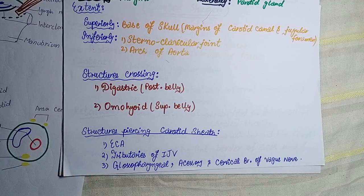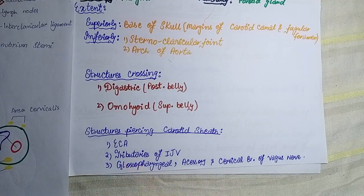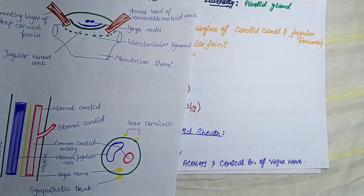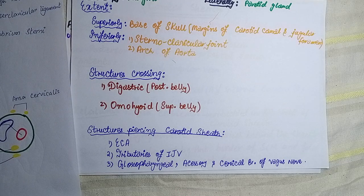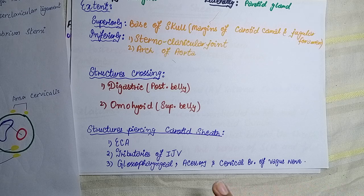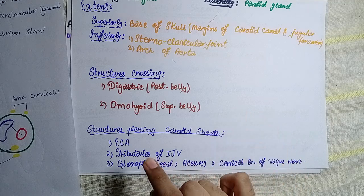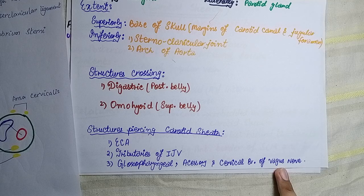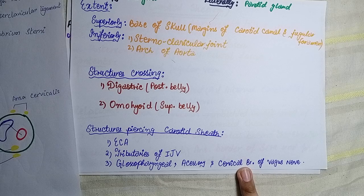Now we talk about the structures that pierce the carotid sheath. First, the external carotid artery pierces the carotid sheath. The tributaries of the internal jugular vein also pierce the carotid sheath, because they must drain into the internal jugular vein. The 9th nerve, the 11th accessory nerve, and the cervical branch of the vagus nerve also pierce the carotid sheath. So the structures piercing the carotid sheath are: the external carotid artery, the tributaries of the internal jugular vein, the cervical branch of the vagus nerve, and the 9th and 11th cranial nerves. The vagus nerve itself is a content, but its cervical branch pierces the sheath.